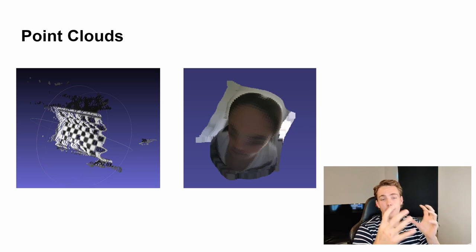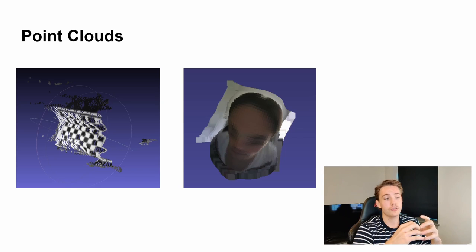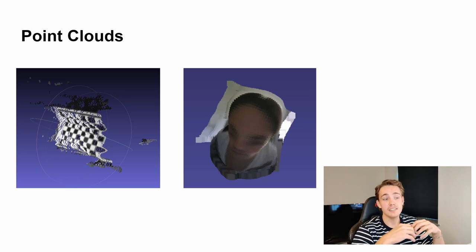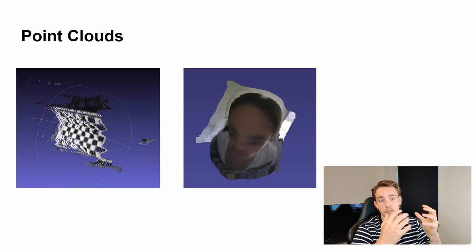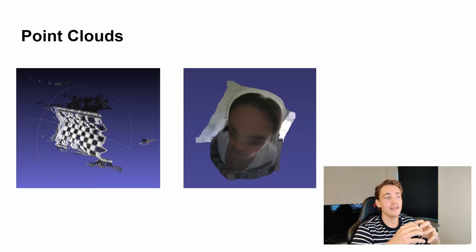I want to talk about what point clouds are, how we can construct them, and how we can use Open3D to post-process them. When we talk about point clouds, we're talking about a three-dimensional data structure where we have x and y coordinates from an image frame, plus depth information for each individual pixel in a dense point cloud — so we have x, y, and z coordinates as three-dimensional data.